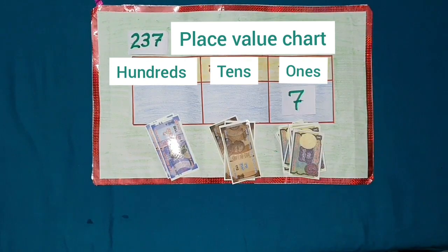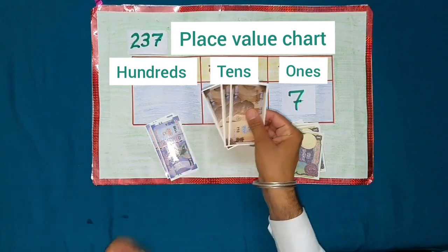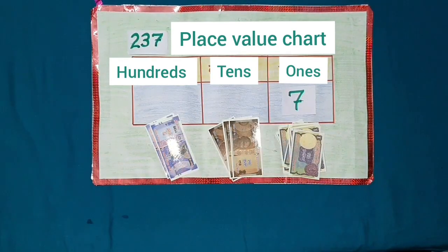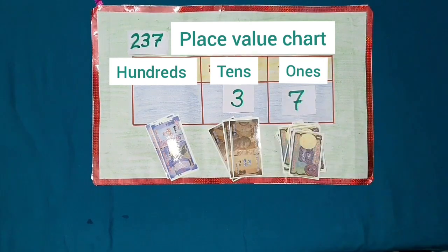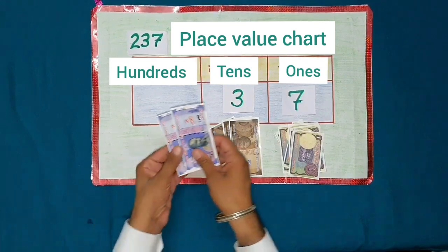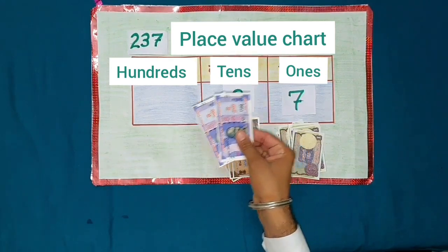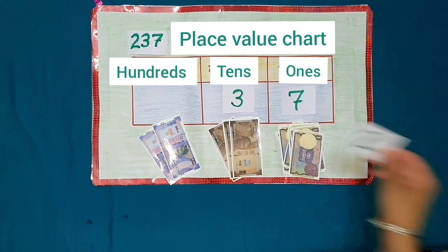Let's count notes of Rs.10: 1, 2, 3. Three notes of Rs.10. So, the digit for the place of 10's is 3. Let's count notes of Rs.100: 1, 2. Two notes of Rs.100. So, the digit for the place of 100's is 2.